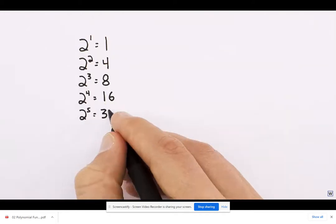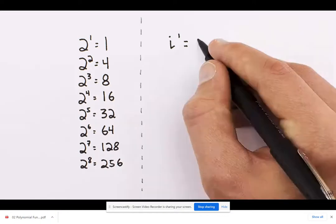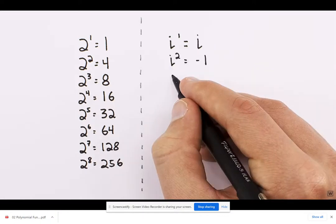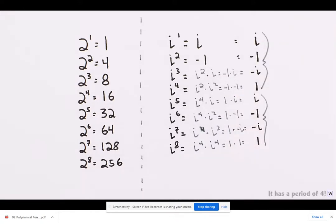If we raise i to higher and higher powers, it doesn't get bigger as other numbers would. We know i squared is negative one from the definition, and if we keep multiplying i by itself, we see a pattern that repeats every four multiplications over and over. Hold on to that fact for 90 seconds.